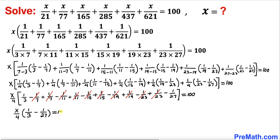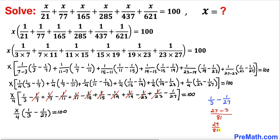Let's focus on 1/3 minus 1/27. By cross-multiplication: (1×27 - 3×1)/(3×27) = (27 - 3)/81 = 24/81. Dividing numerator and denominator by 3 gives us 8/27. So the expression inside the parentheses reduces to 8/27.